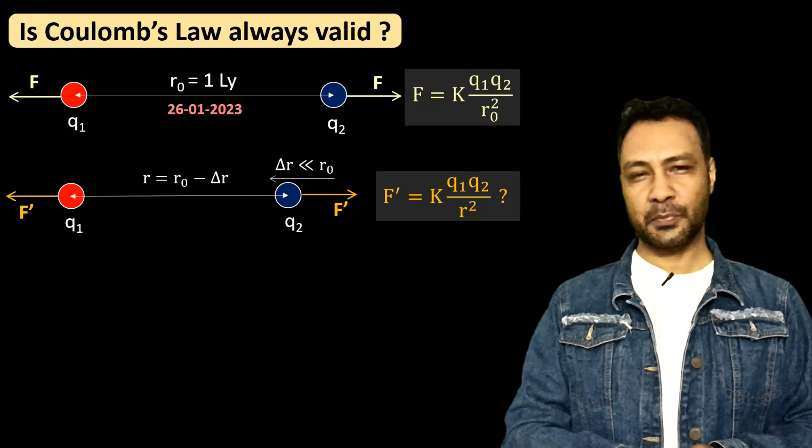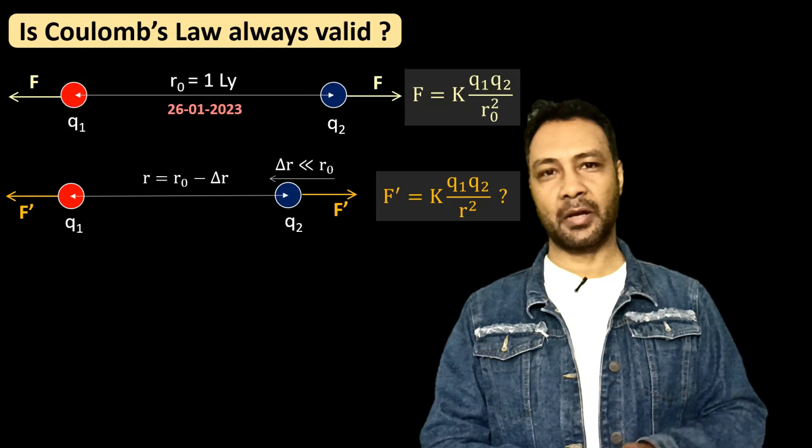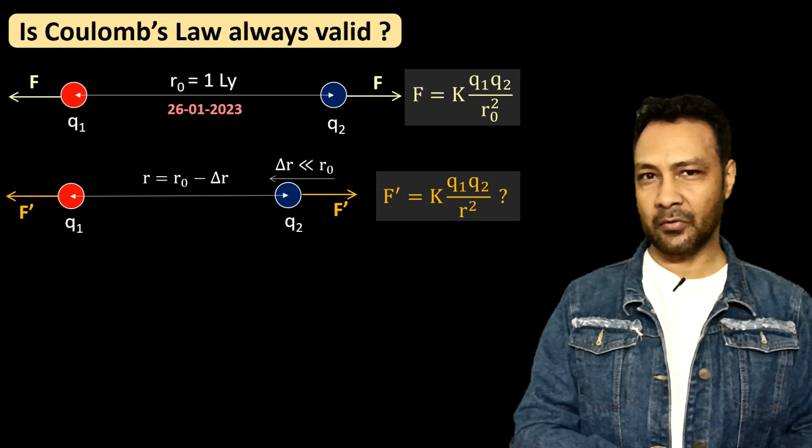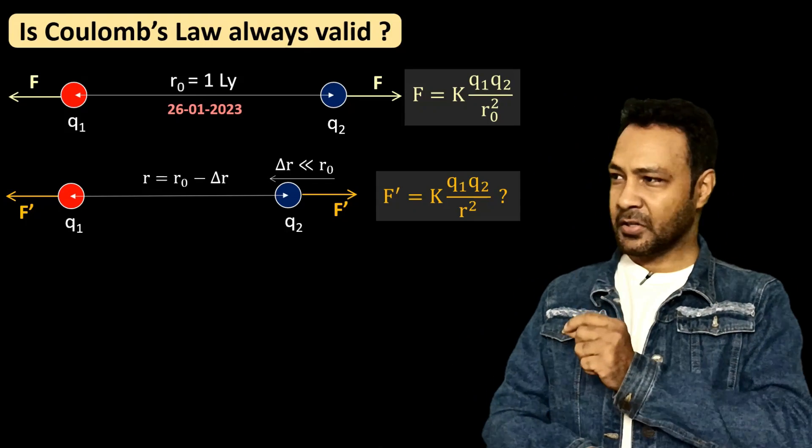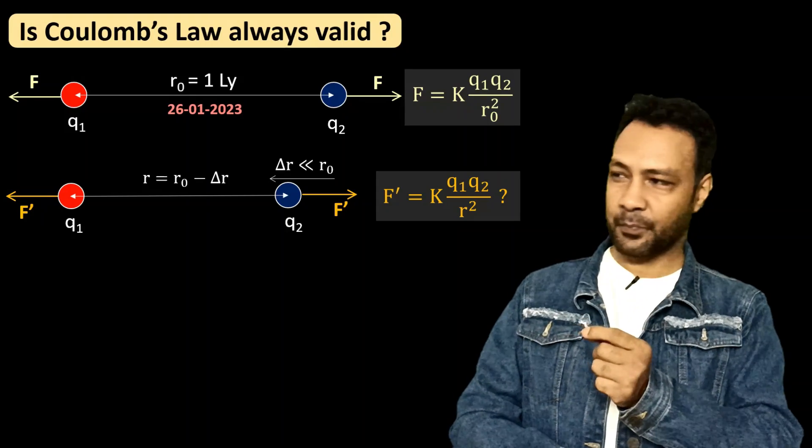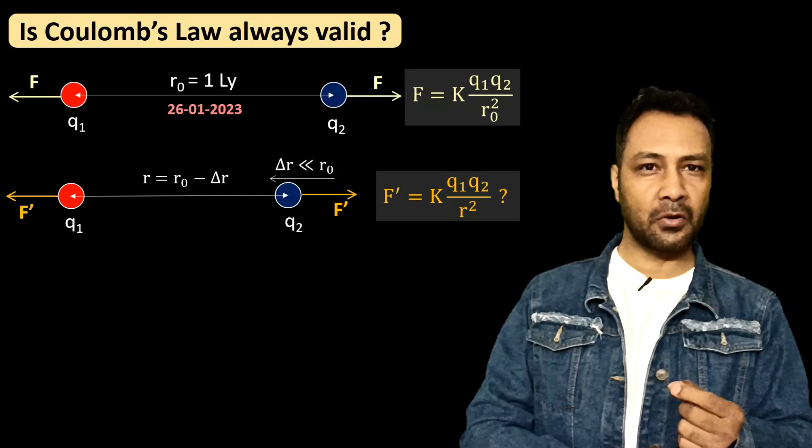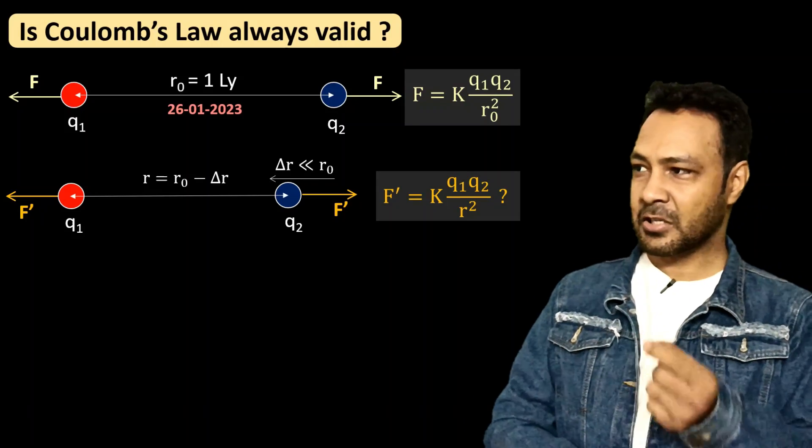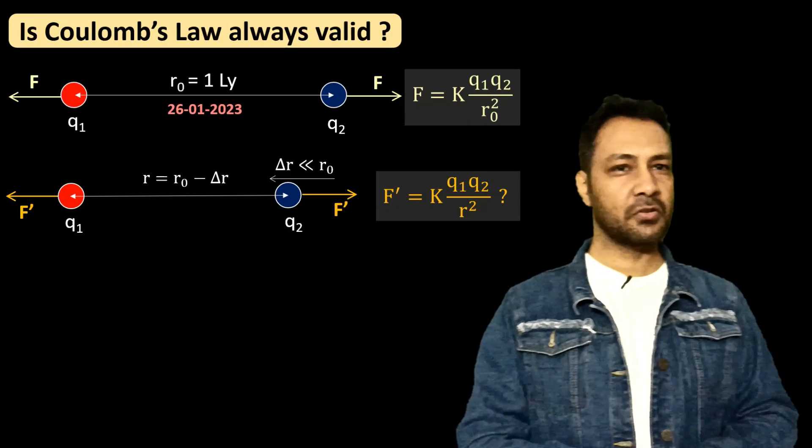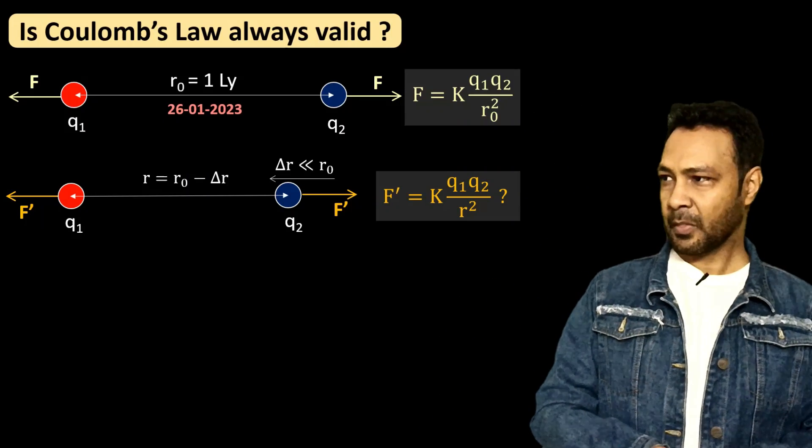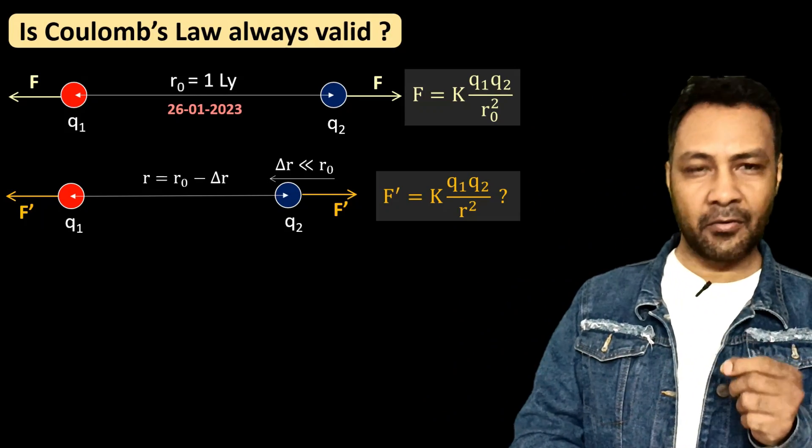And according to special theory of relativity, nothing can travel faster than the speed of light. So any information also cannot travel with a speed greater than that of light. So q1 is there, q2 has displaced. q1 will know whether q2 has displaced or not only when the information starts traveling from q2 and reaches to q1. Original distance of q1 and q2 was one light year.